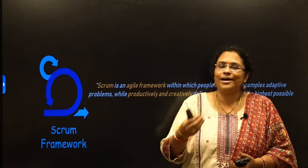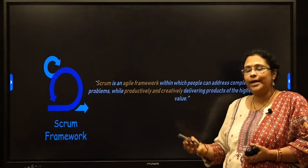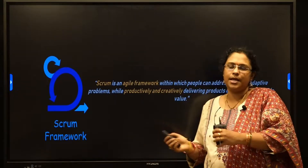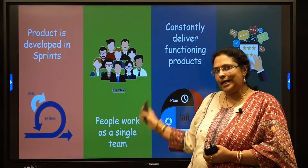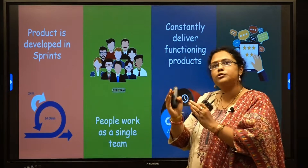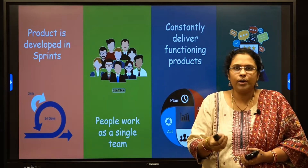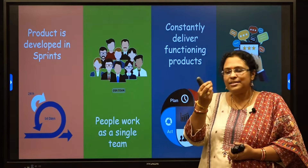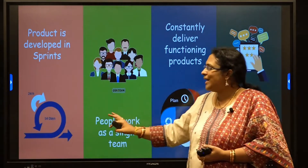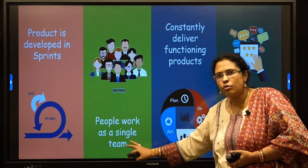Scrum is basically one of the Agile frameworks which helps in giving more productive and creative ideas in the development of a particular product. In Scrum, whatever product we are going to develop is divided into small chunks or parts, and each chunk is called a sprint. One sprint is developed for up to one to two weeks, approximately 14 days.